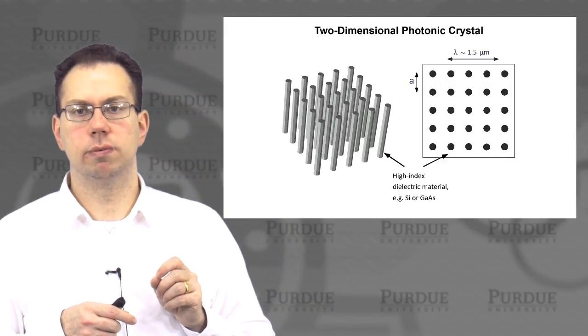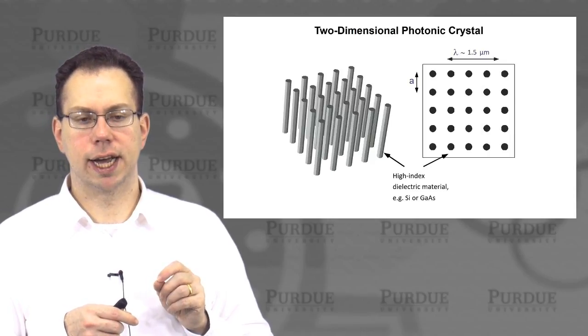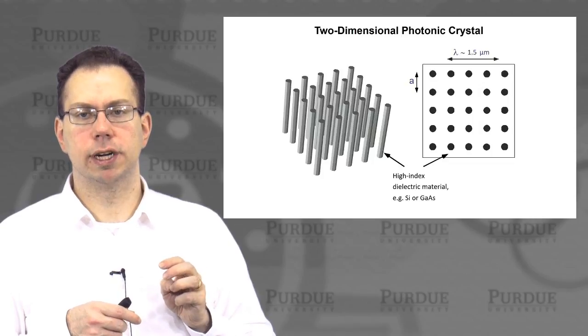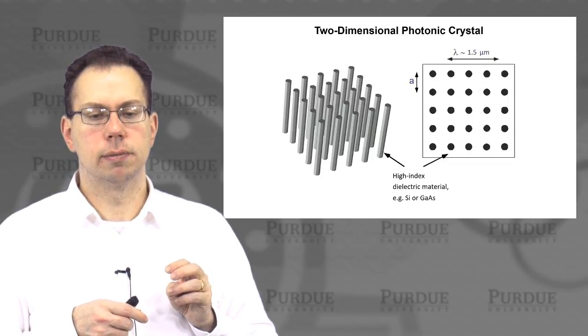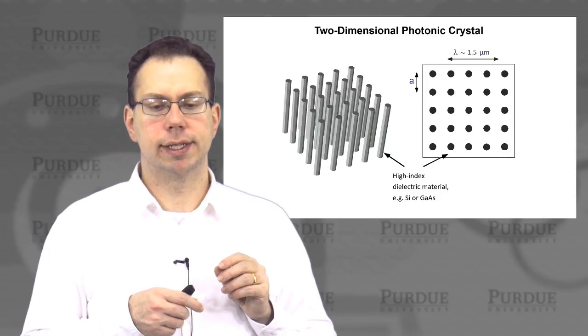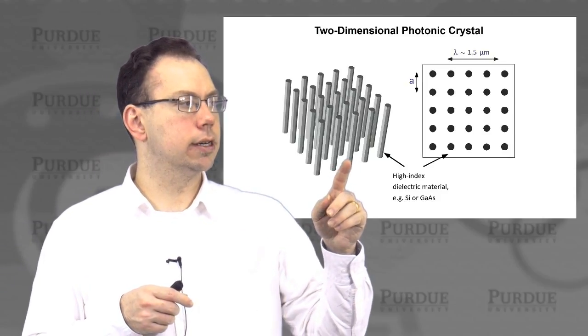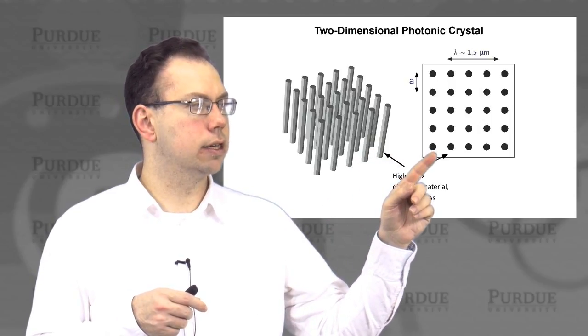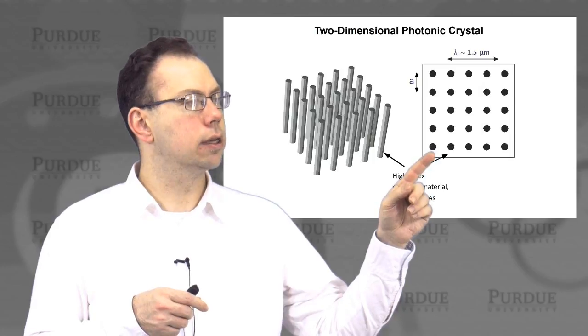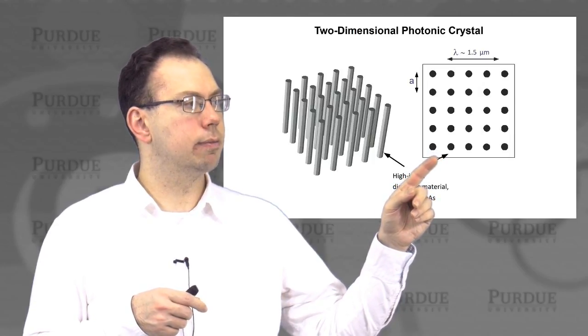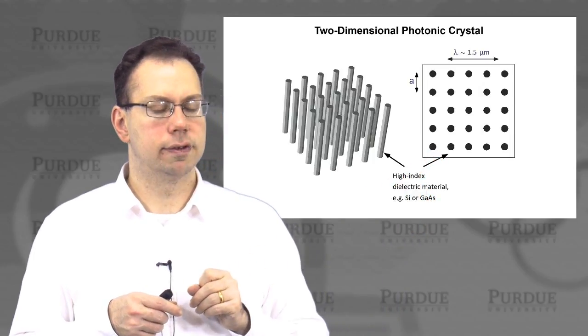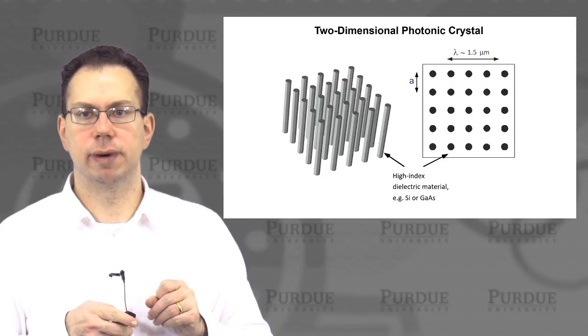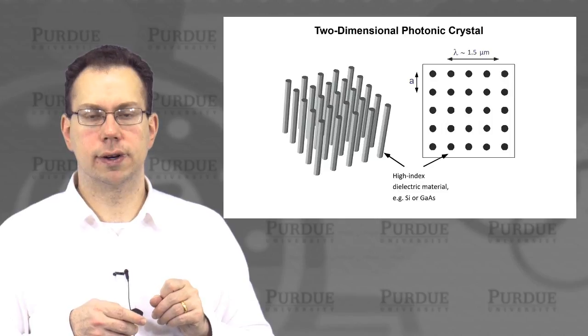But you can even do more complicated structures which also have band gaps. One example is a 2-D photonic crystal where you have periodicity both in the x and y directions, perhaps making rods out of some high dielectric material and then putting them into air. So schematically it's shown here and maybe like the 2-D structure looking from top down view looks like this. And then the period is on the order of maybe half a micron. Then you've got a band gap wavelength around 1.5 microns, which is suitable for telecom applications.